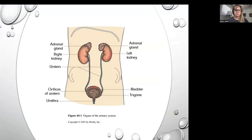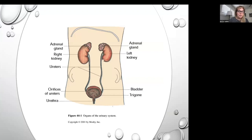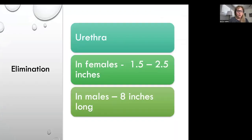Looking at this picture, we have our adrenal glands, which have a lot to do with blood pressure, and then our left and right kidneys, ureters — which are fairly long — our bladder, and then our urethra. In females, the urethra is 1.5 to 2.5 inches, and in males it can be about eight inches long.